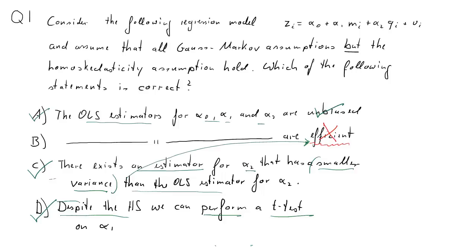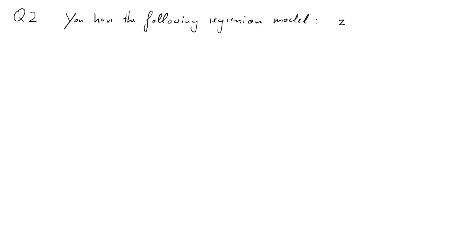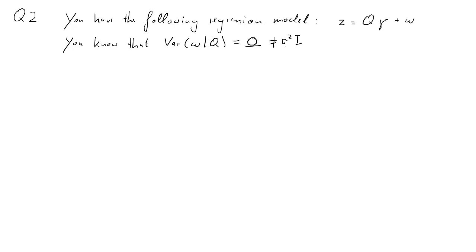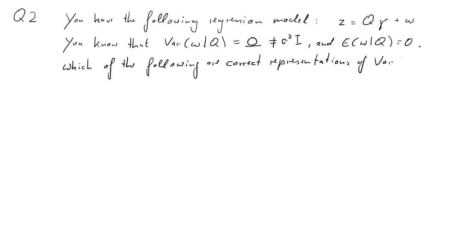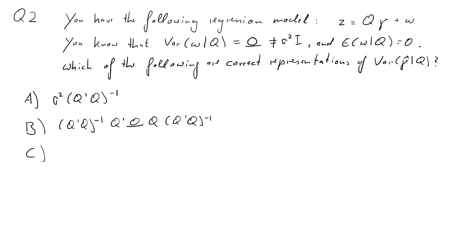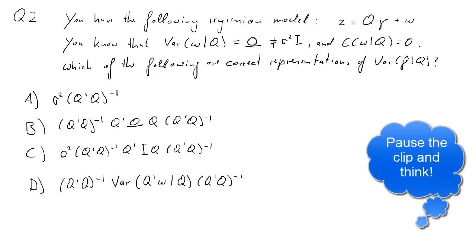D: Despite heteroscedasticity, we can perform a t-test — and that is correct. We just have to use the correct variance formulation. Here comes the second question. Consider the following regression model in matrix form: S = Q*gamma + W. You know that the variance of W conditional on Q is equal to omega, and that is not equal to sigma squared times the identity matrix. Also assume the zero conditional mean assumption holds. Which of the following are correct representations of the variance of gamma hat conditional on Q? Several answers are possible — pause the clip and think.